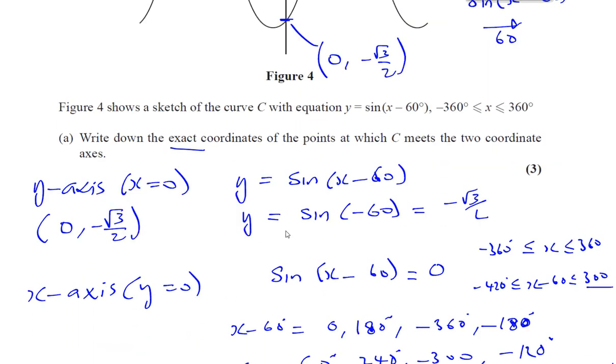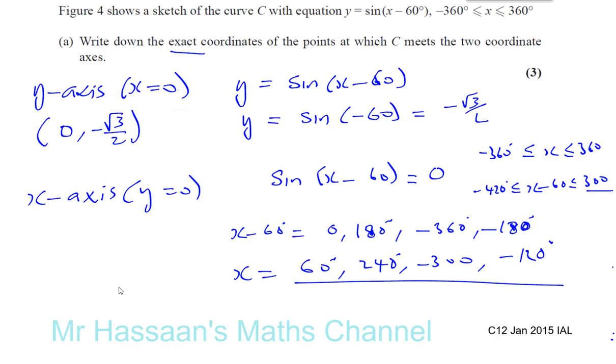Write down the exact coordinates of the points. Best to write it in coordinate form. Okay, so the coordinates are going to be 60, zero, and 240, zero, and you've got a minus 300, zero, and you've got a minus 120, zero. And we also had this point here, which is zero and negative root 3 over 2. Those are all the places where it hits a coordinate axis. Okay, thank you for watching.